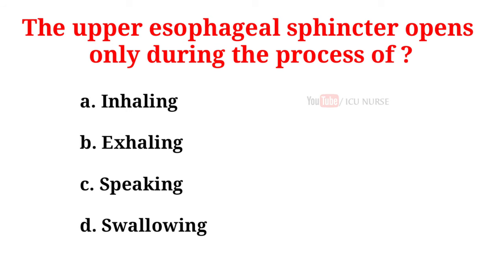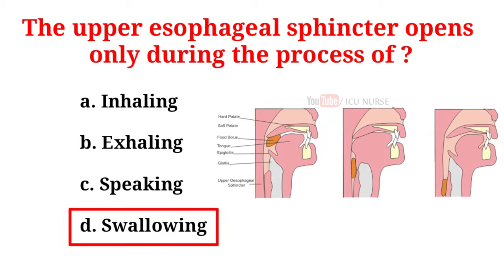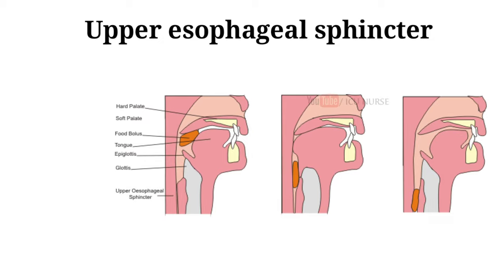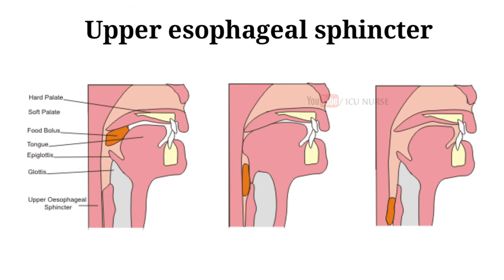The upper esophageal sphincter opens only during the process of: A. Inhaling. B. Exhaling. C. Speaking. D. Swallowing. And the correct answer is D. Swallowing. The upper esophageal sphincter opens only during the process of swallowing to permit food to pass into the esophagus. At the inferior end of the esophagus, the lower esophageal sphincter opens to permit food to pass from the esophagus into the stomach.